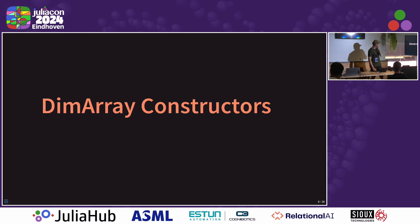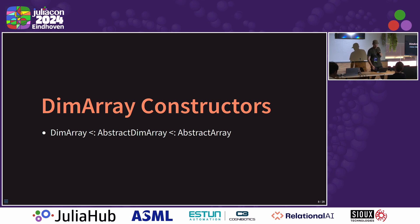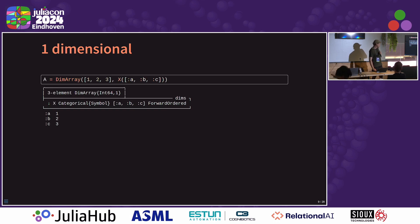Next, I'll show you the basic main use case: building or using a DimArray. A DimArray is an abstract dim array, which is just an abstract array. So mostly it behaves just like an array unless you use special indexing. This is the simplest way to make an array. We've made an array with a small vector of numbers and a dimension holding a vector of values that relate to those numbers. You can see that those are detected as being categorical values. So we have an X dimension of categorical values where A is 1, B is 2, C is 3. But you can expand this arbitrarily.